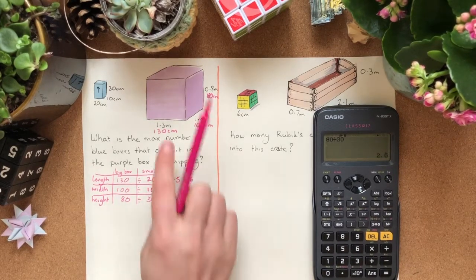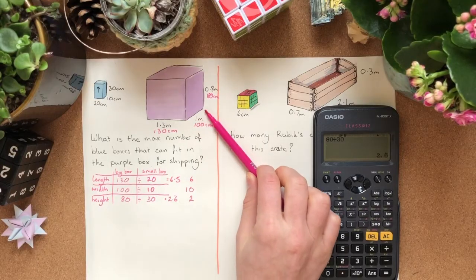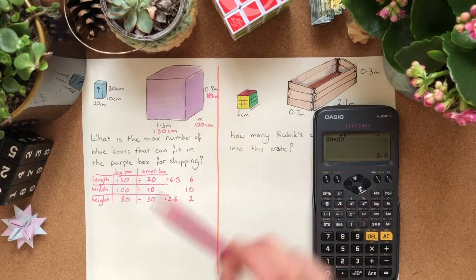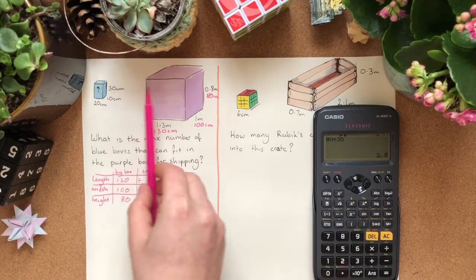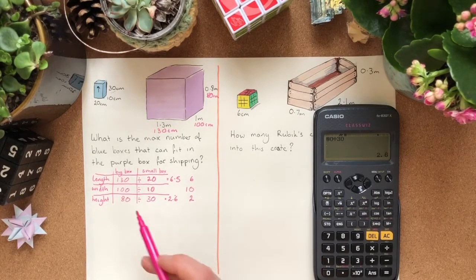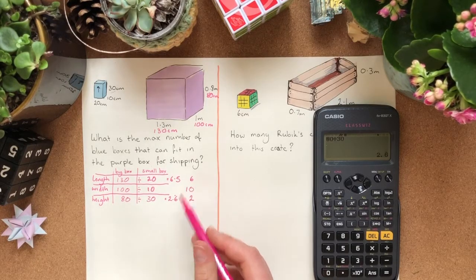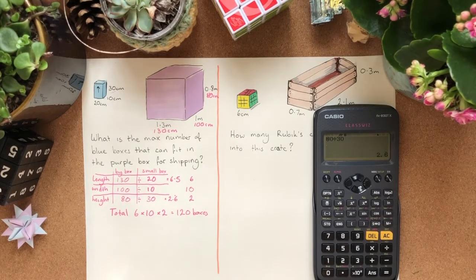Okay? So now we know in the length, we can fit 6 boxes in this way. We can fit 10 boxes going back that way. And we can have 2 layers of boxes. If you think the height's 30, the height of this one is 80. So, we can't quite fit 3 layers in, but we can get 2 layers in. And then to figure out the total, we're going to times these 3 numbers together. That gives us 120 boxes. And I make sure to show the sums, show my working.